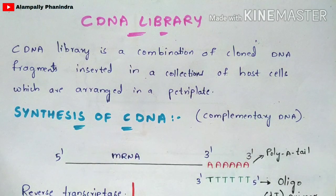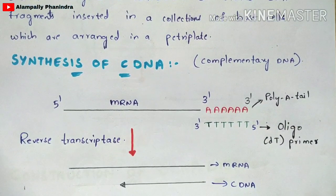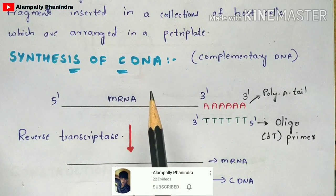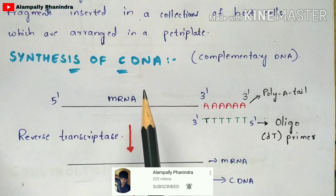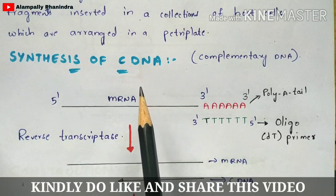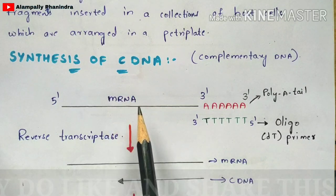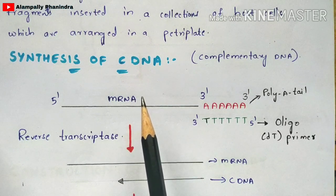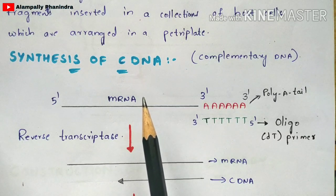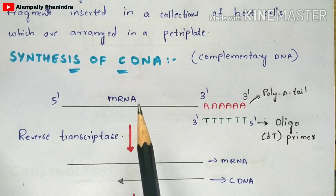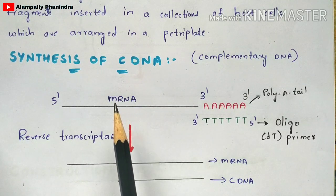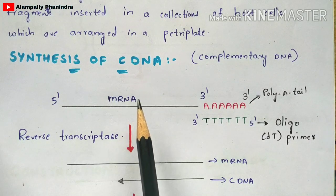So what is meant by cDNA? cDNA is nothing but complementary DNA. In a eukaryotic cell, the nucleus is present, and in the nucleus the genetic material — which is DNA — is present. The DNA undergoes transcription to form mRNA, which is the messenger RNA in mature form. Mature form means only exons are present; introns are not present, because during processing the splicing mechanism occurs — introns are removed and all exons get joined together to form this mature mRNA.